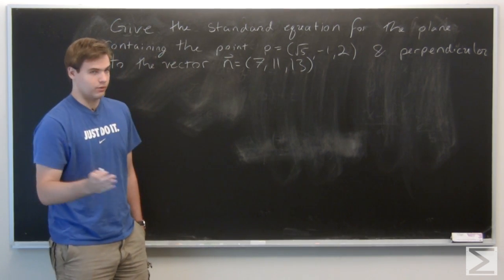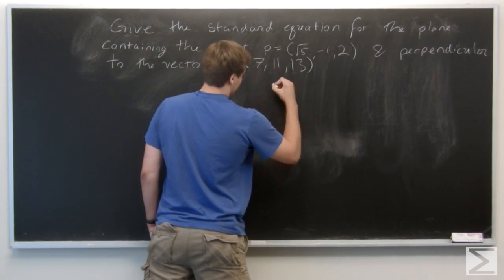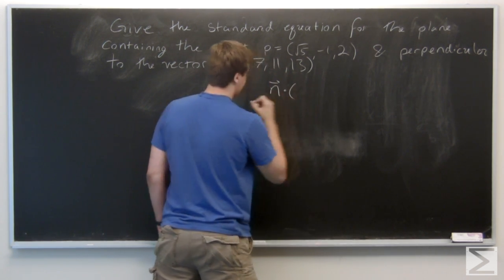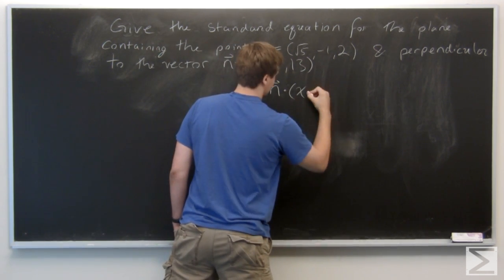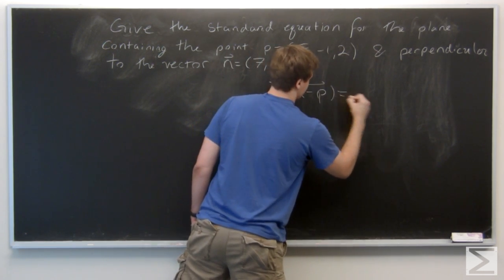So recall that in general, the standard equation for this plane will be given by the set of points x in R^n such that n · (x - p), considering this as a vector, is equal to 0.